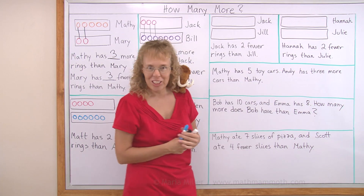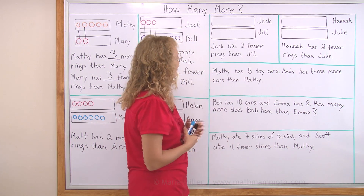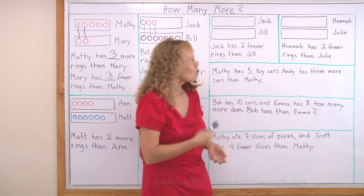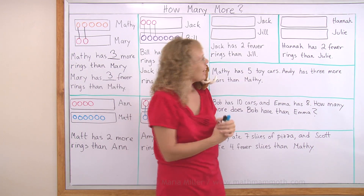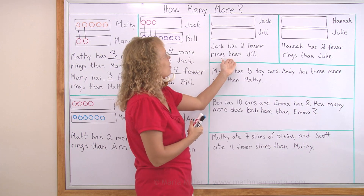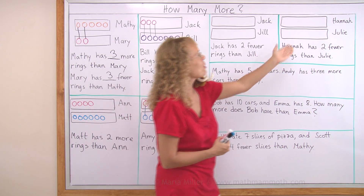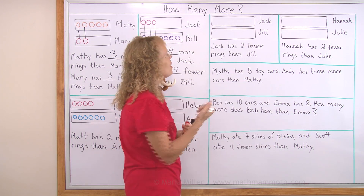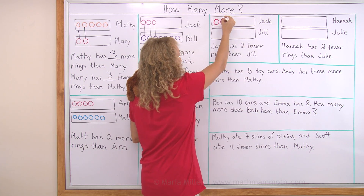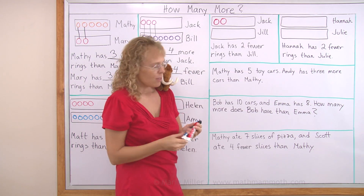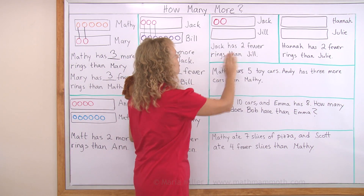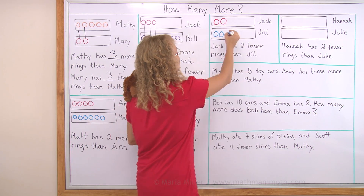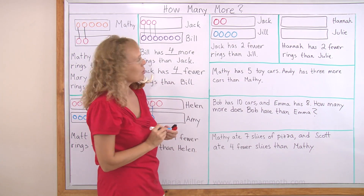Over here, we will draw the rings for Jack and Jill and also for Hannah and Julie. Jack has two fewer rings than Jill. Over here is the same thing — Hannah has two fewer rings than Julie. I'll show you how we can make this true and draw different amounts. Jack has fewer rings and Jill has more, so I'll draw some for Jack here for starters. For Jill I need to draw more — Jack has two fewer rings, so Jill has two more rings than Jack. For Jill: first the same amount and then two more. Jack has two and Jill has four.